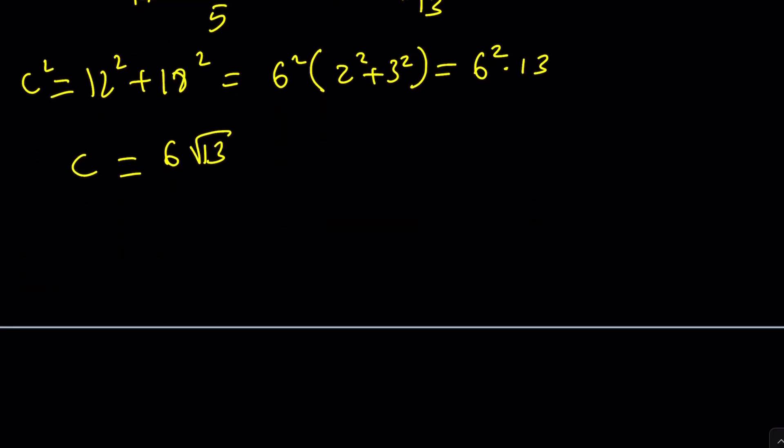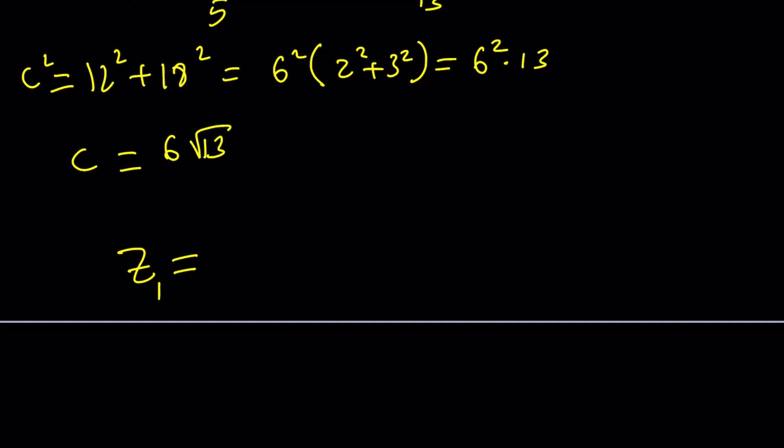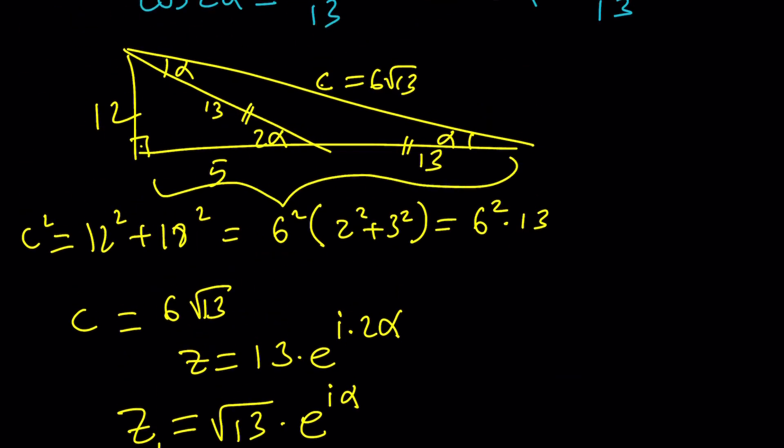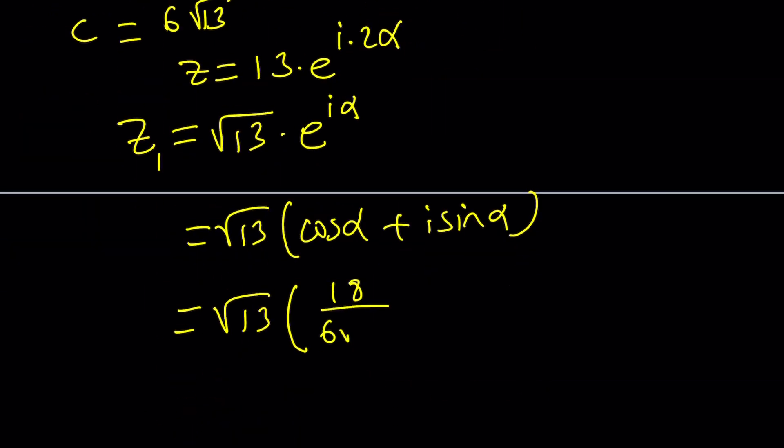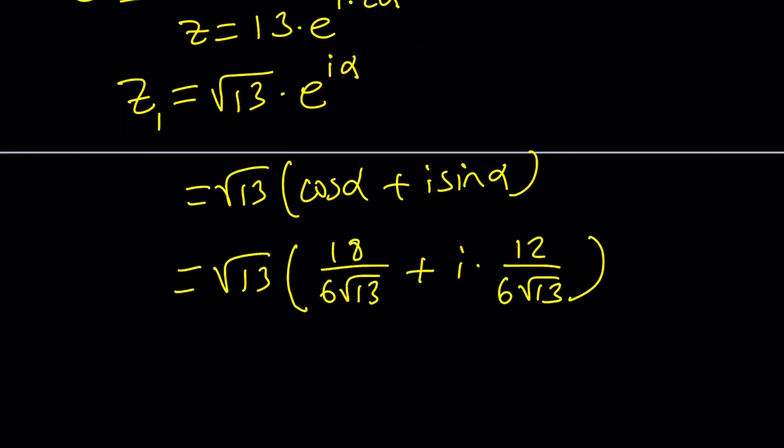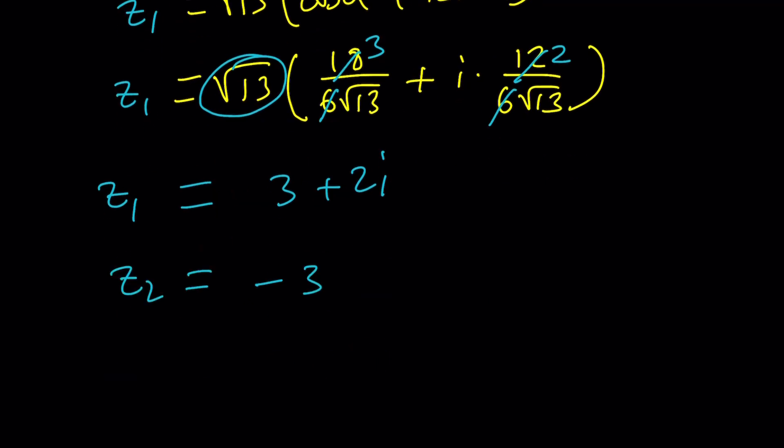And then you're going to get the following. z is going to be, at least z sub 1, since z was written as 13 times e to the power i times 2 alpha, z sub 1 is going to be the square root, which is square root of 13 times e to the power i alpha. And that is equivalent to square root of 13 times cosine alpha plus i sine alpha. Let's find out what those values are. Cosine alpha from this triangle is going to be 18 over 6 root 13. And sine alpha is 12 over 6 root 13. If you simplify those, you're going to get 3 over root 13 and 2 over root 13. And when you distribute the root 13, this is going to give you for z sub 1, 3 plus 2i. And obviously, z sub 2 is just going to be negative 3 minus 2i.